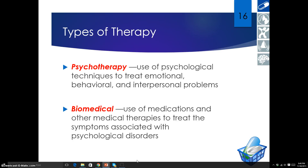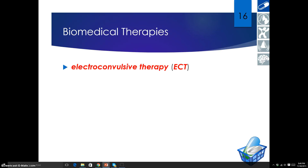Biomedical therapies — the most common one is drugs. Now let's talk more about biomedical therapy. Electroconvulsive therapy, or ECT, is the old-fashioned strap-someone-down-and-electrocute-them approach. There used to be problems with breaking people's bones, breaking their ligaments, and all sorts of problems. We used to use it for all sorts of things, including as a form of torture. But we've cracked down on that. The good question is: do we still use electroconvulsive therapy?